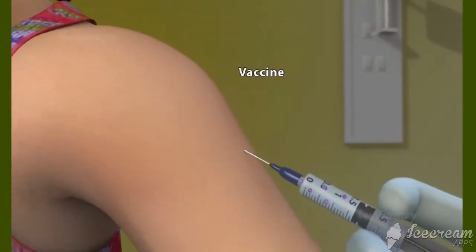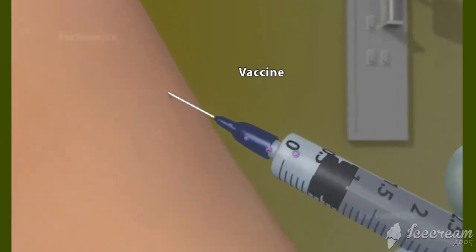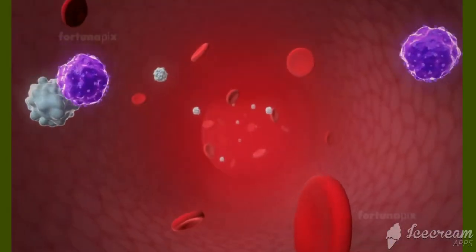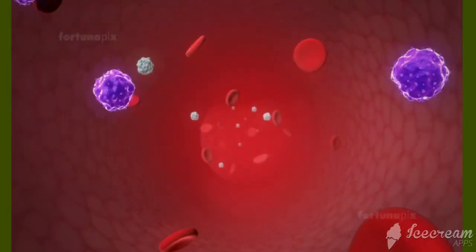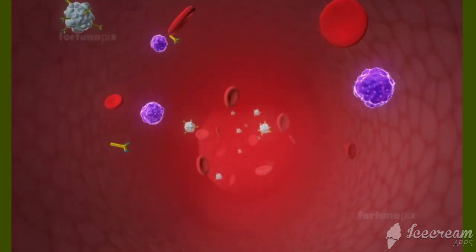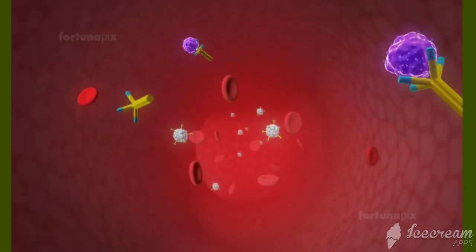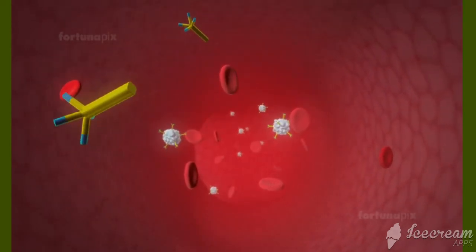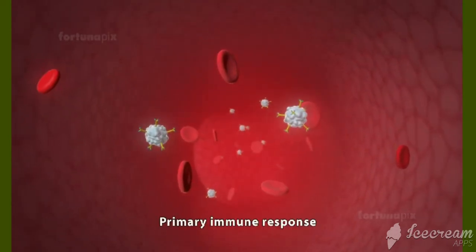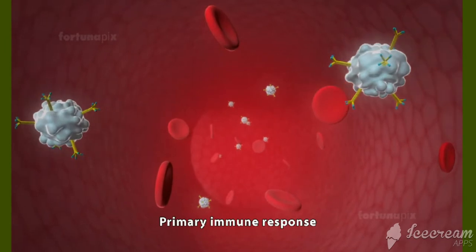A vaccine mimics the pathogen or antigen. When vaccinated, the immune system responds by producing antibodies to that particular antigen. This response is called the primary immune response.